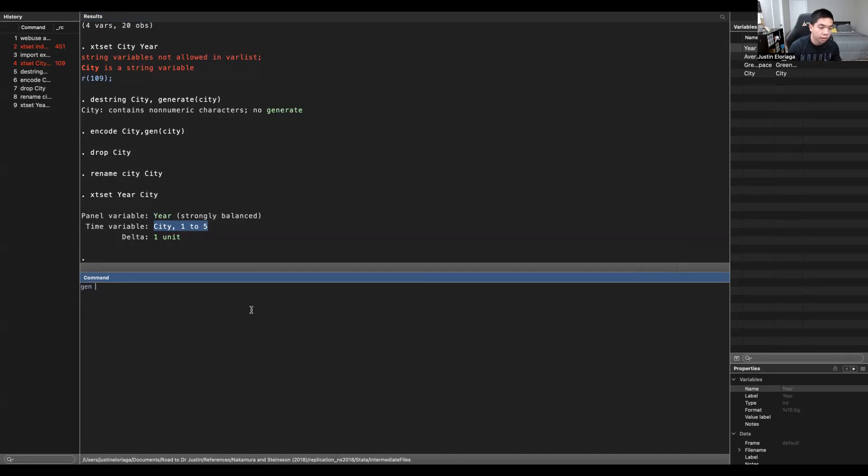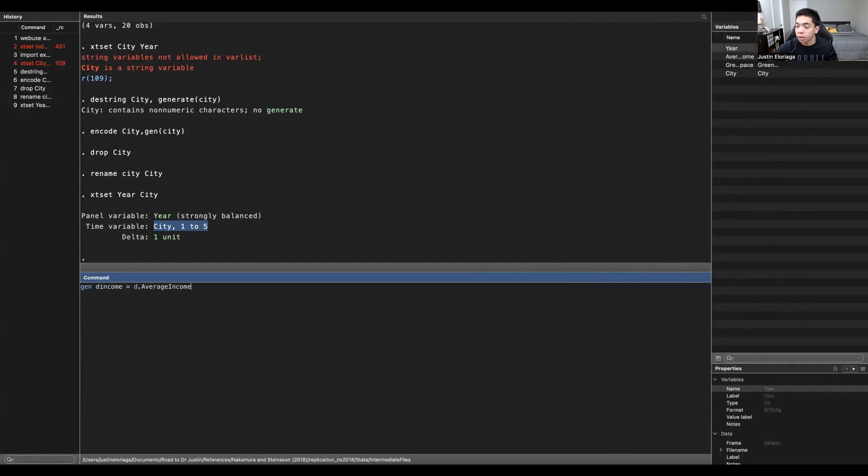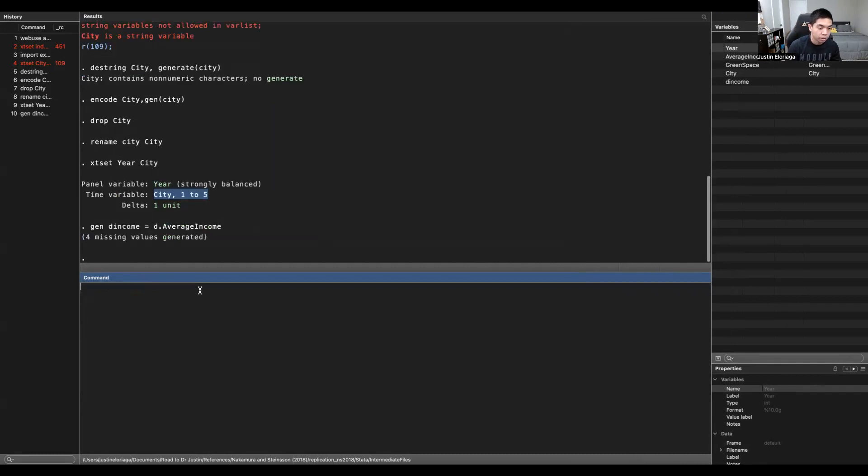Well, we first need to generate the differences of the variable. So we need to generate the difference of average income and green space. So gen D_income, which is D.average_income. This should be the name of the variable here, average_income. Then I should do gen D_greenspace, which is D.greenspace, and we get this.